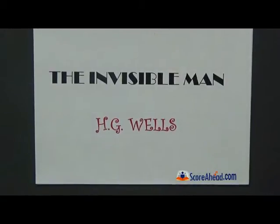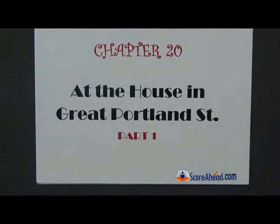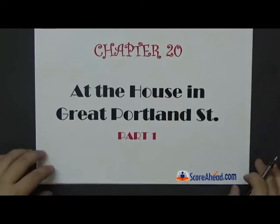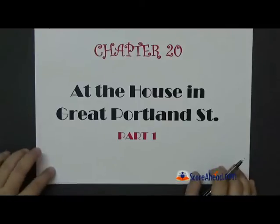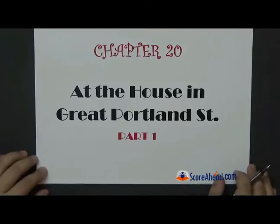The Invisible Man by H.G. Wells. Today we are on chapter number 20, and as you can see, chapter 20 is also going to be divided into part 1 and part 2. Here we have part 1 of this chapter: At the House in Great Portland Street.